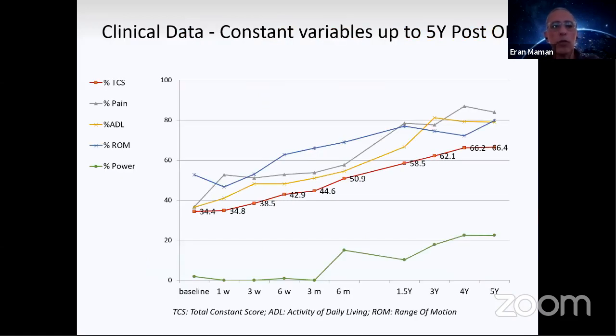These are the numbers which are repeatedly seen in studies of the balloon. If we look at the variables of the constant score - pain, ADL, range of motion were all improved. The power did not, which makes sense. Deltoid is capable of lifting the arm, not much more than about two kilos. There are patients that can lift and do whatever they like, but usually the power is improving but not too much.